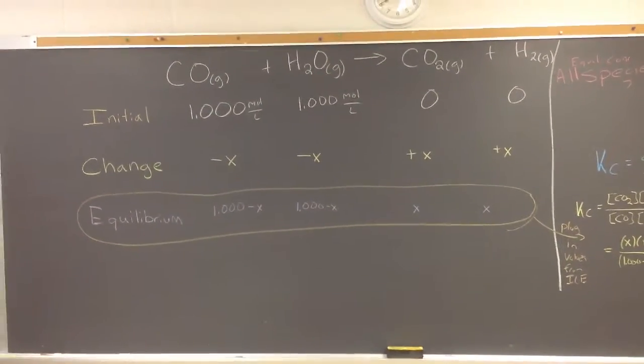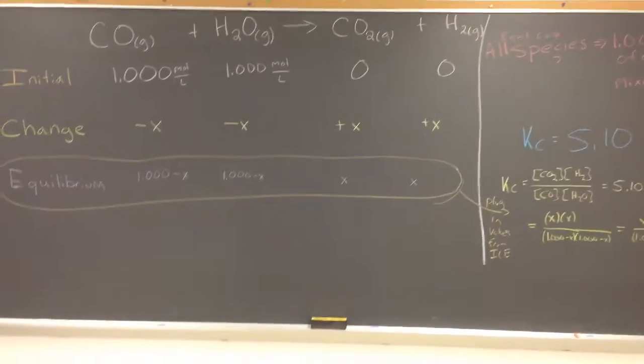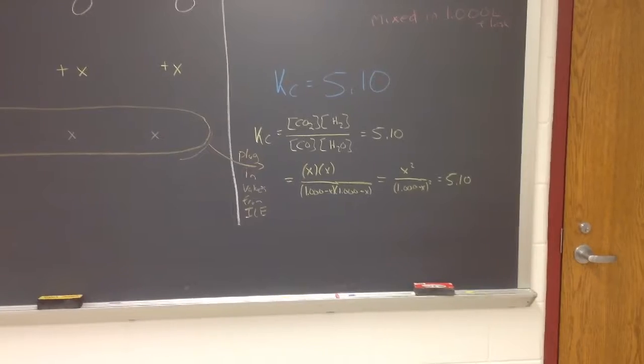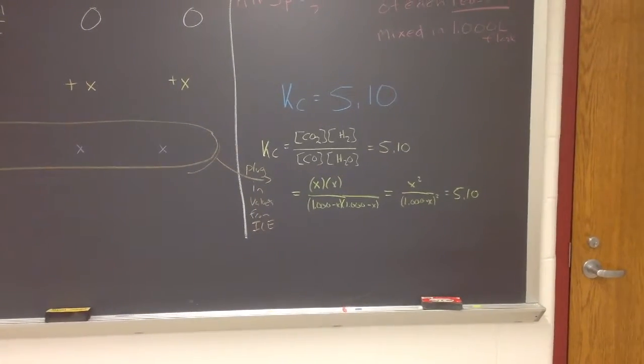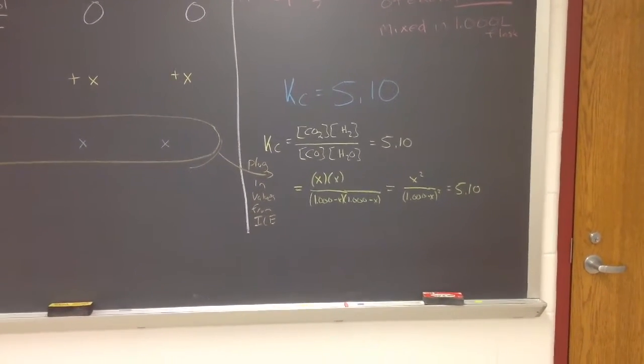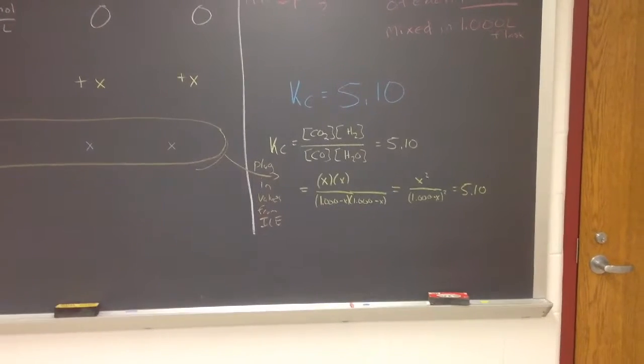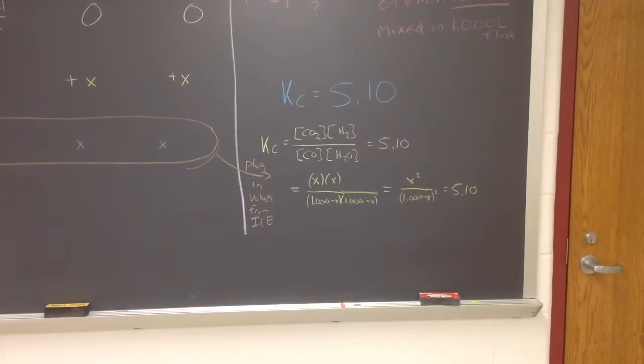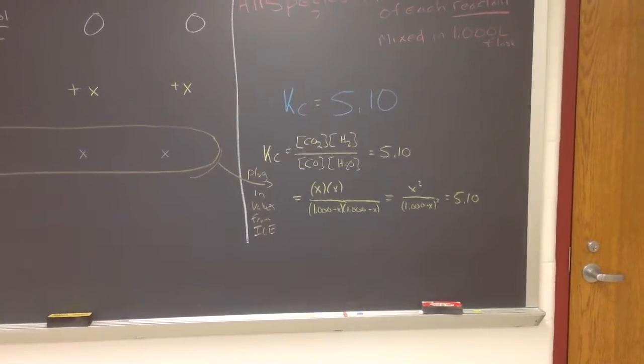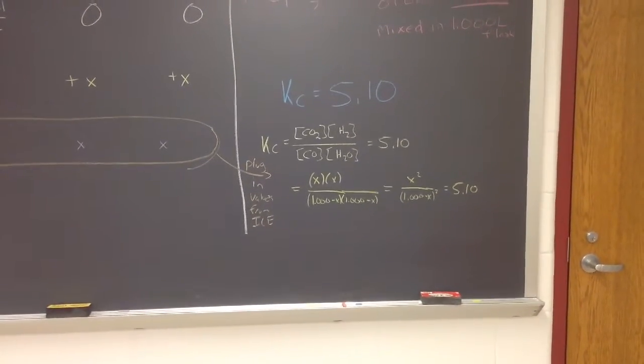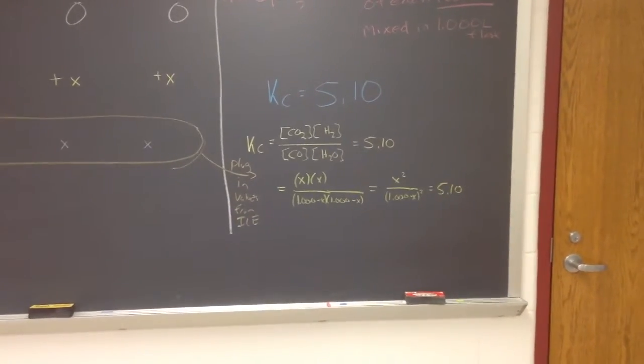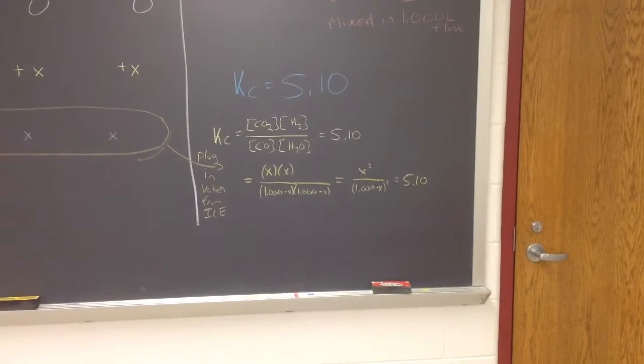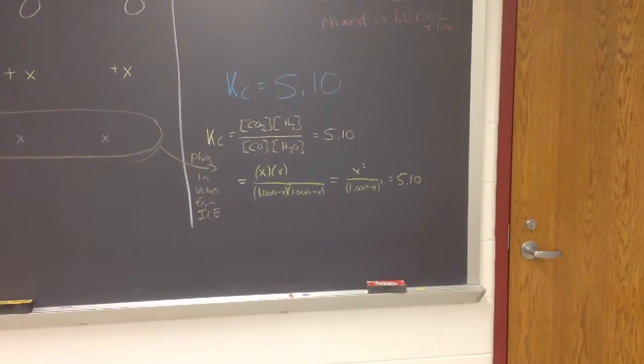So again, I like to pull this one because it's a very easy starting one. So let's move over here. We're going to take and look at the equilibrium constant expression. We've got the products CO2 and H2 on the numerator, and then CO and water on the denominator equals our KC value that's given. If we plug in our values from our ICE table, we get X times X over 1 minus X times 1 minus X, which is simplified as X squared over 1 minus X squared equals 5.1.